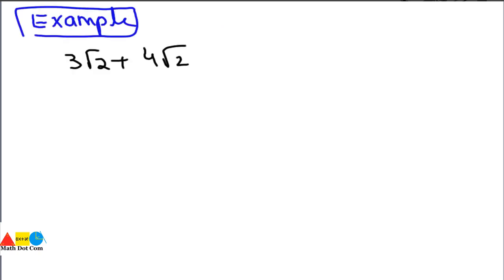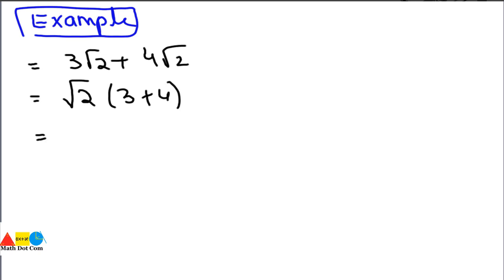We will explain it through an example. We check whether the radicand is the same — yes, the radicand is 2 in both. Then we check whether the order (index) is also the same — yes. So we can add these together. We solve it by taking √2 as common and writing 3 plus 4, giving us 7√2. This is the answer for adding two like surds.